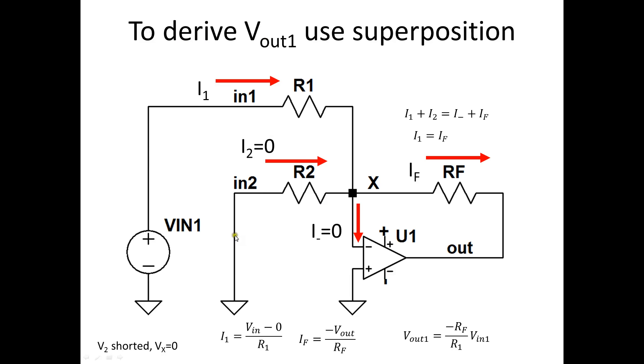So let's use superposition and short Vin2. Well, from the previous instructions we know that Vx equals zero because we have a feedback resistor, because these two voltages are equal to each other and they're shorted to ground. And so if this is at ground and this side is at ground, no current is going to flow through R2 and no current will flow through I minus as well. So even though the KCL is I1 plus I2 equals I negative plus If, I2 and I negative are equal to zero. So we're back to I1 equals If.